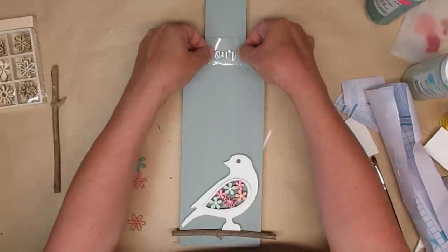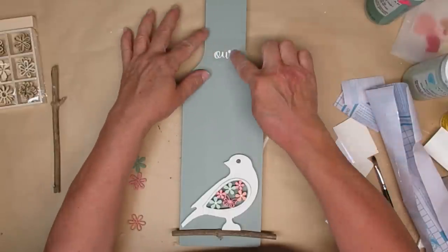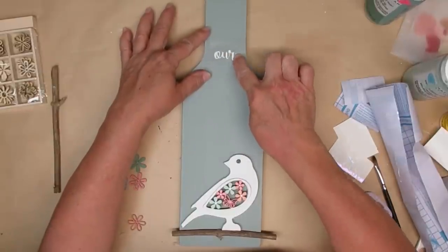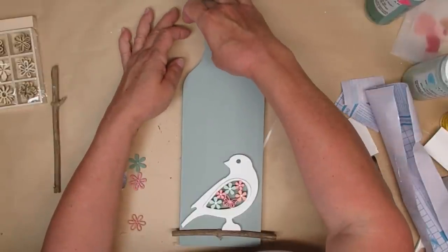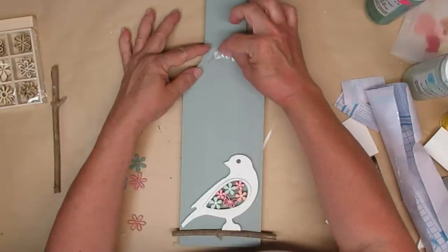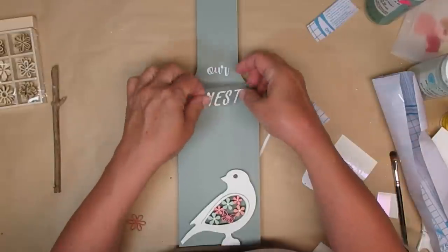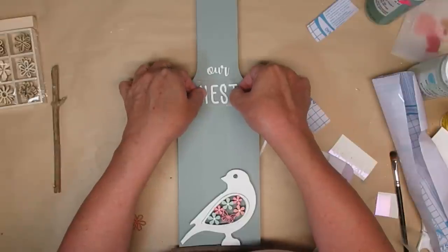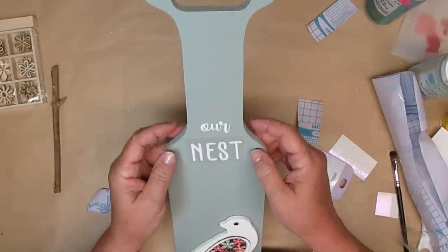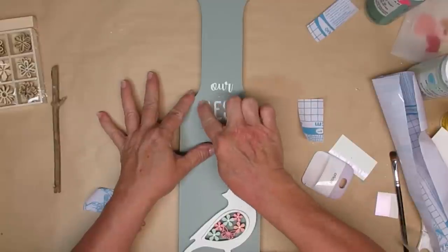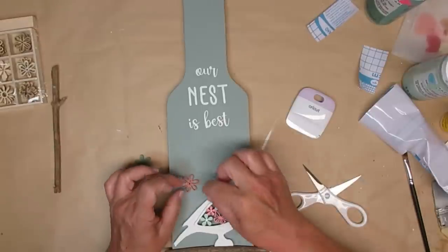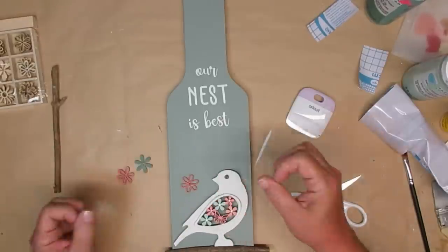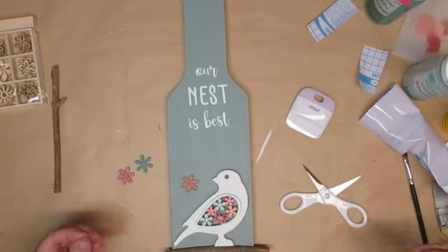Using my Cricut Joy with some Smart Vinyl I cut out the words our nest is best just in the white vinyl and I'm going to apply that to the top part of the board. I like to use different fonts when I'm doing this so our is and best are in Annie Liu and nest is in Father Farmhouse.